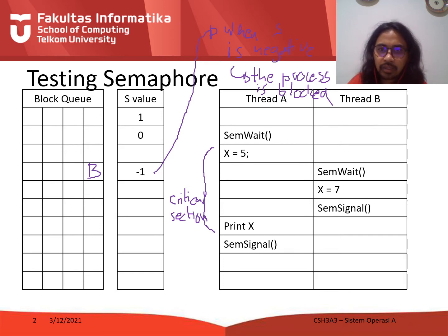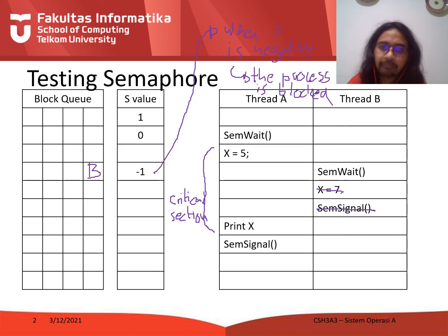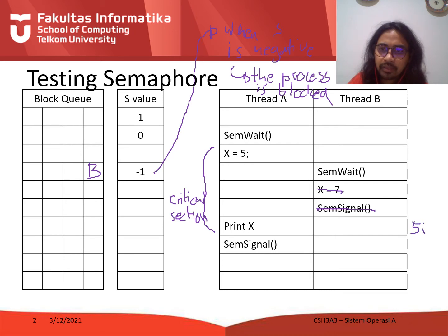Process B enters the block queue and can't go anywhere. When a process is blocked, it doesn't run. So here, x equals 7 doesn't run, send signal doesn't run — it goes back to thread A.